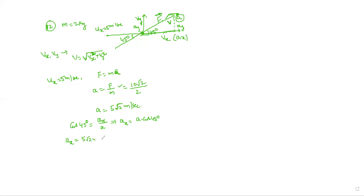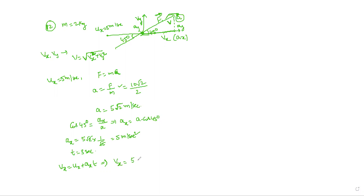Ax equals 5 root 2 into cos 45, and 1 by root 2 gives ax equals 5 meters per second squared. The velocity in the x-direction: using vx equals ux plus ax into t, vx equals 5 plus 5 into 3, so vx equals 5 plus 15, that is 20 meters per second.